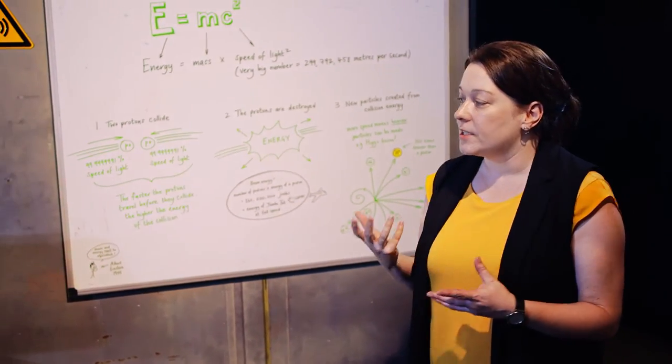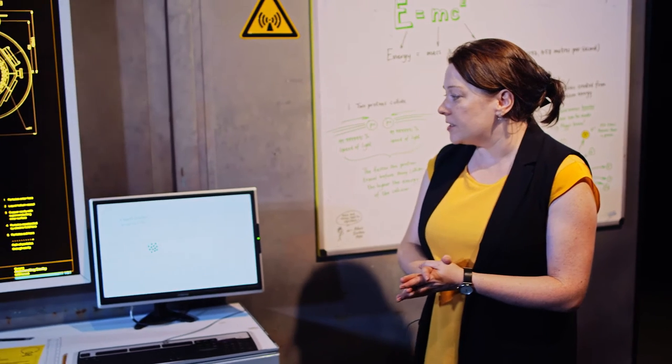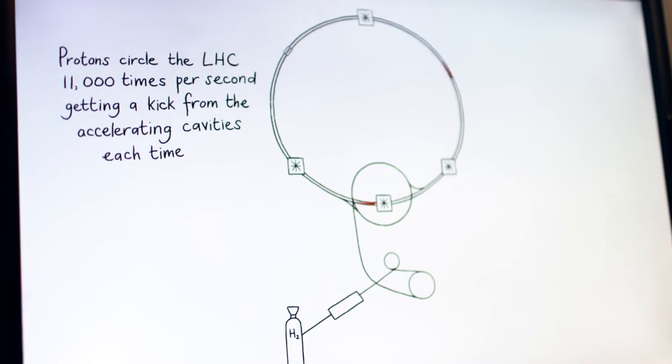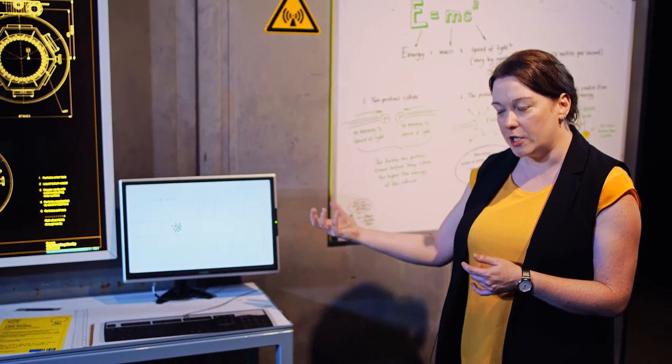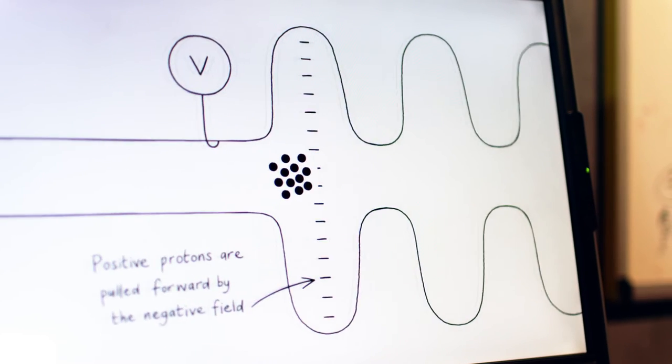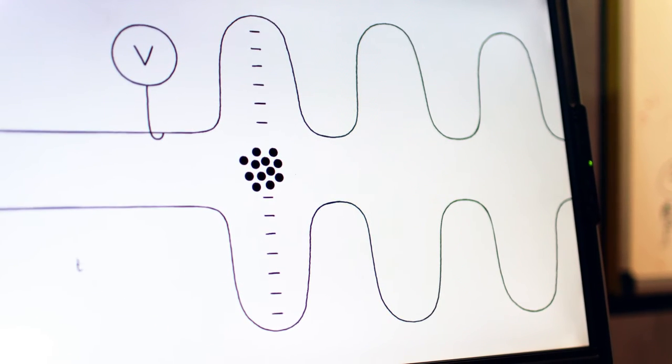To do that, we accelerate them in one part of the LHC ring in a system called the accelerating cavity. Bunches of particles arrive into the cavity. Particles are charged - protons have a positive charge - and there's a negative electric field that will pull them through this cavity, a very high energy electric field.